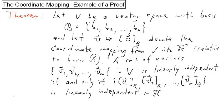In other words, this theorem states that the original vectors are independent if and only if the coordinate vectors are independent.